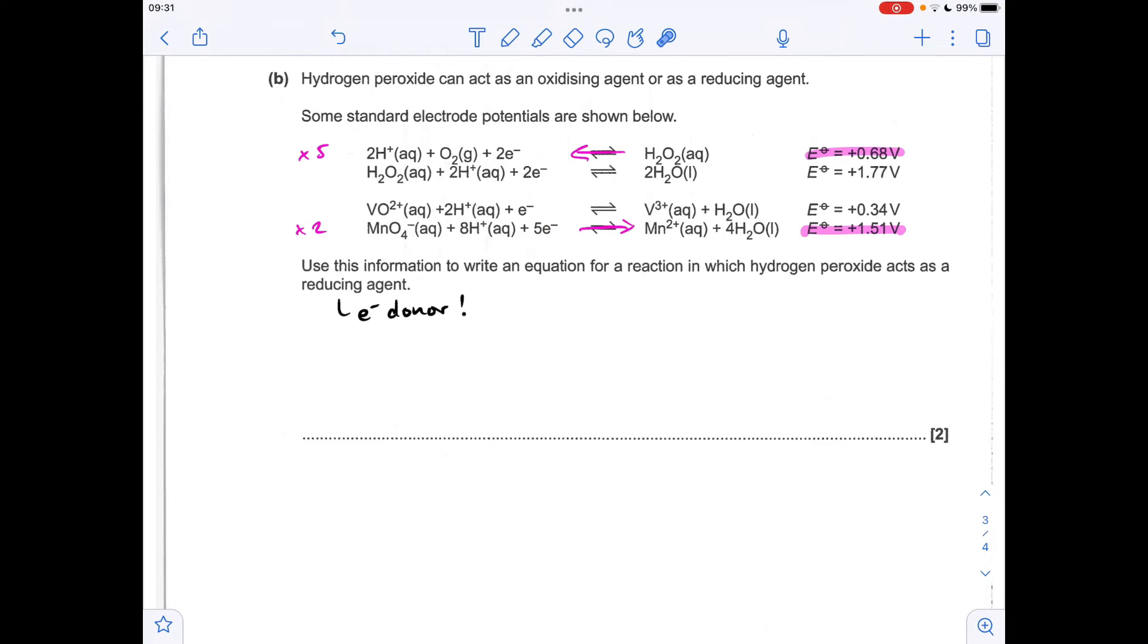The other thing to point out as well is we're going to need to double this one because we've got five electrons in the MnO4- one, whereas we've only got two in the hydrogen peroxide one. So if we get those electrons both up to 10, they're going to cancel out because you'll have 10 electrons on each side of the equation.